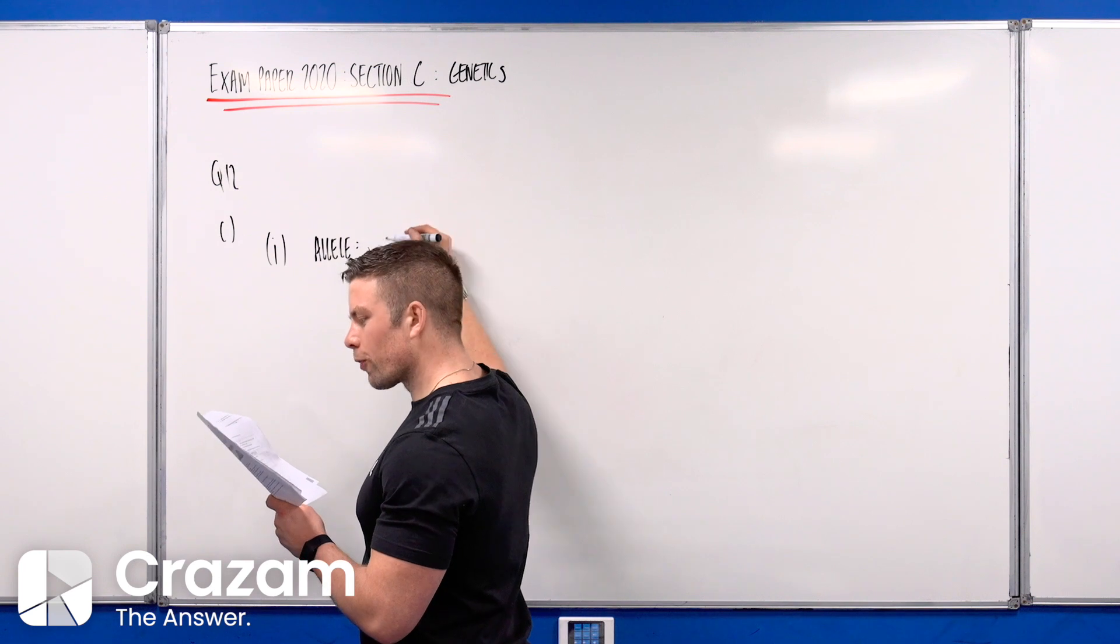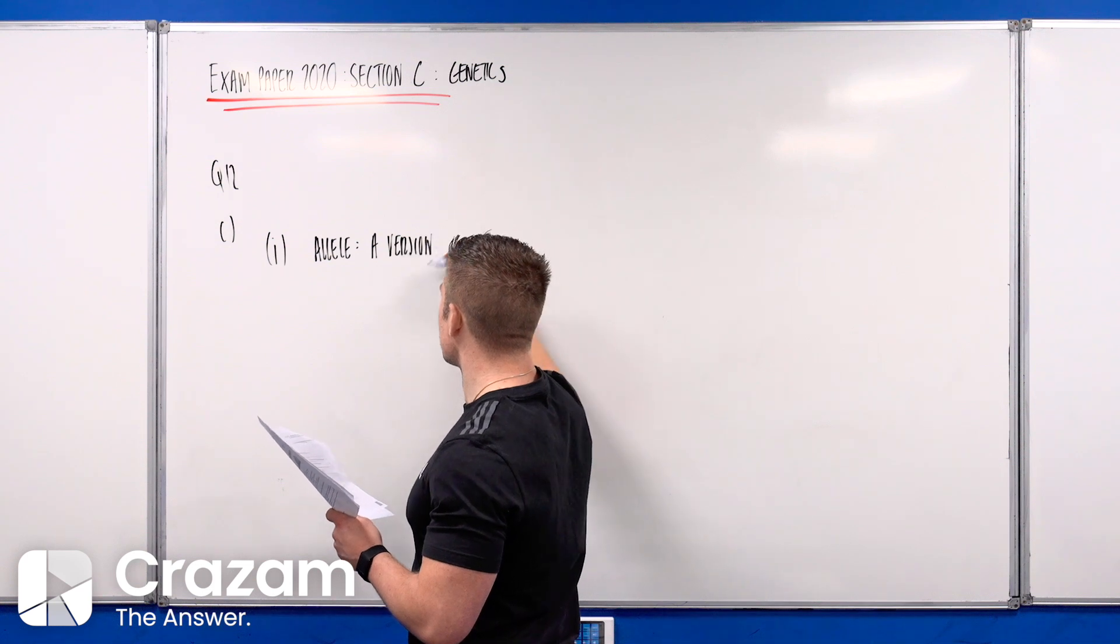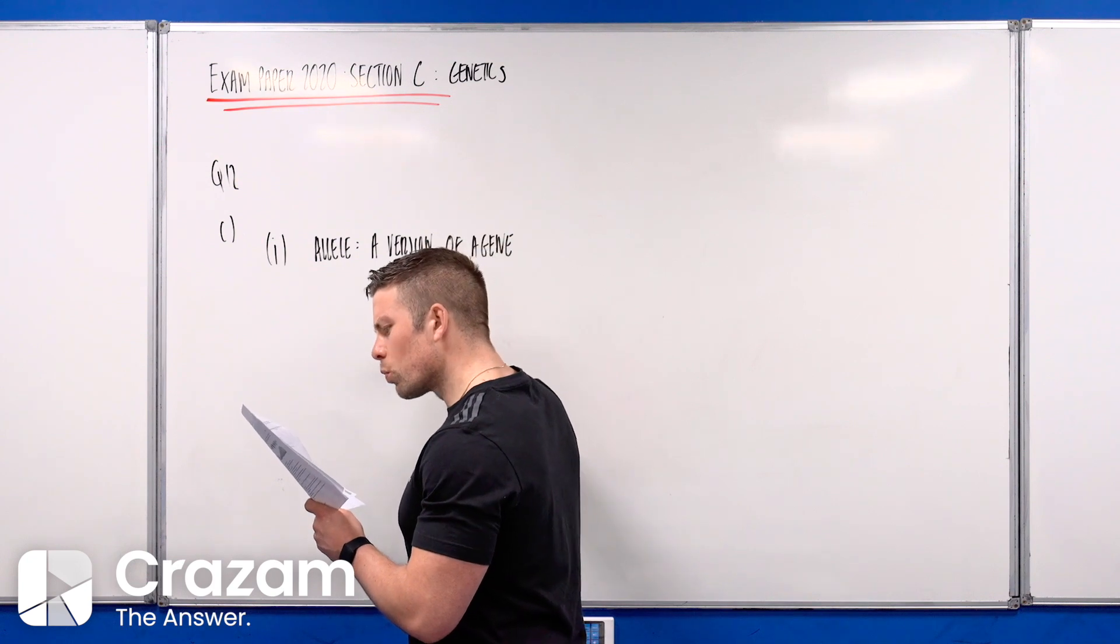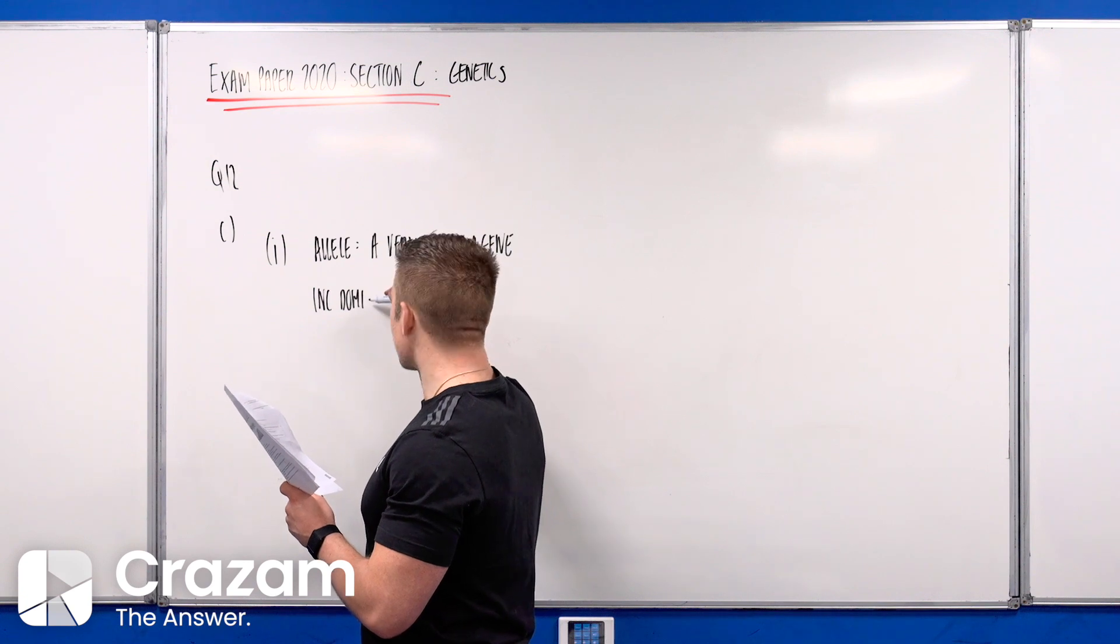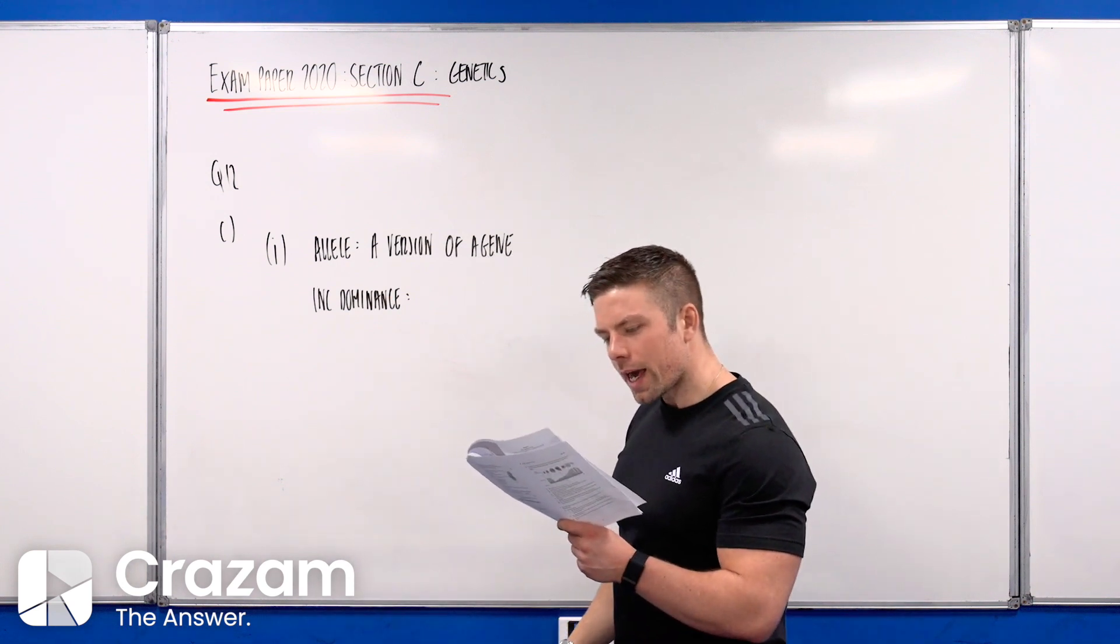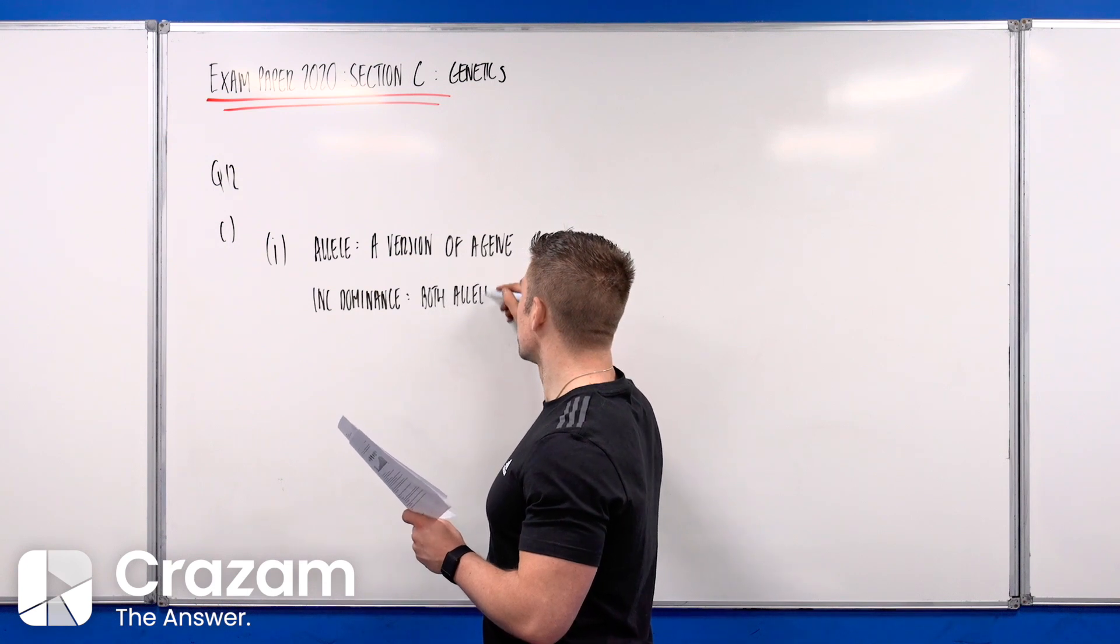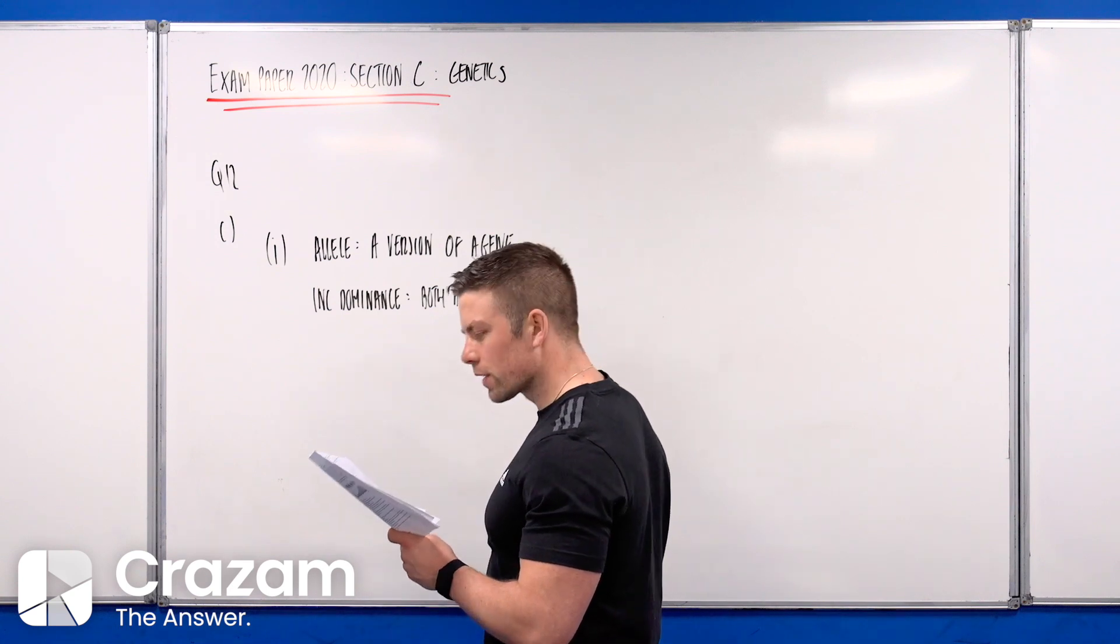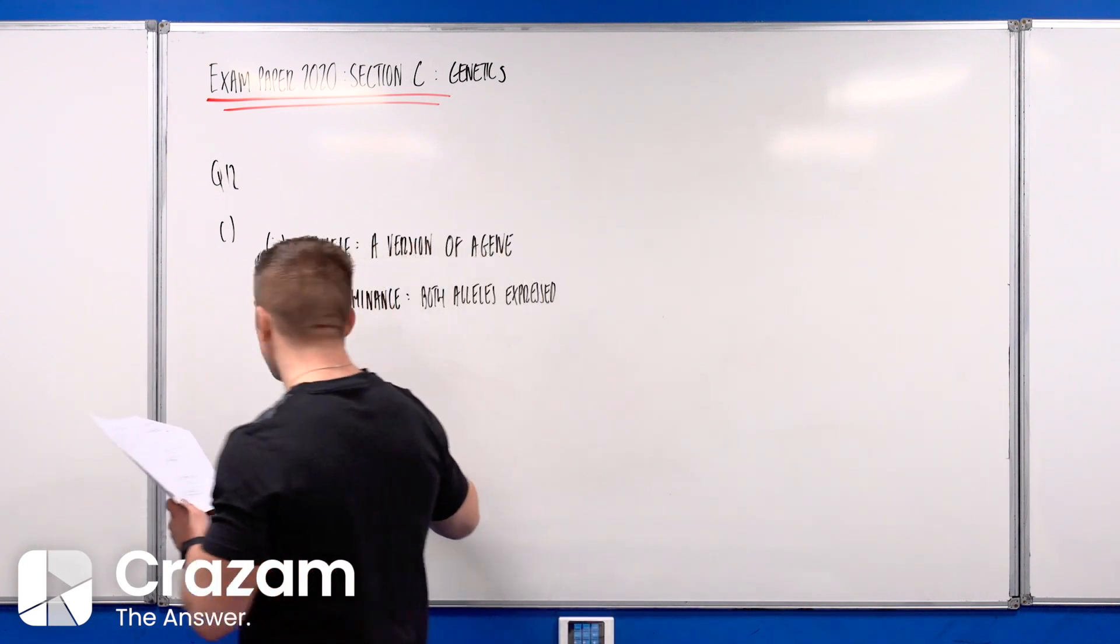The second term is incomplete dominance - this is when both alleles are expressed, usually when you get a mix of some sort. Then homozygous means identical alleles are present, the same version of the same gene - both capital or both lowercase.